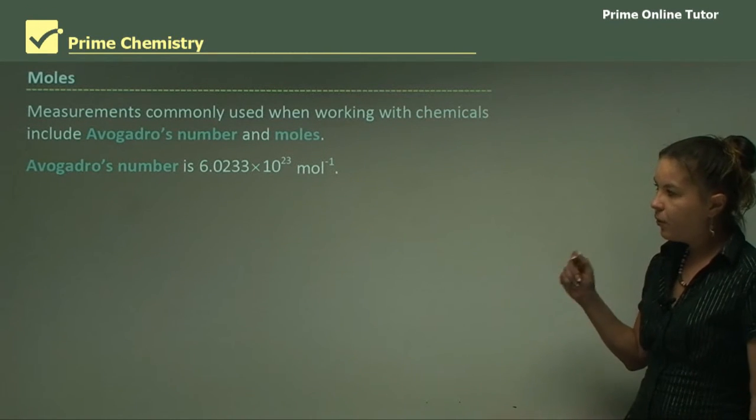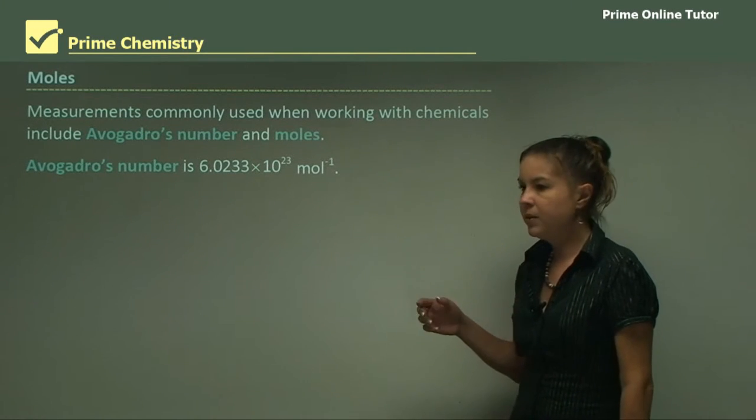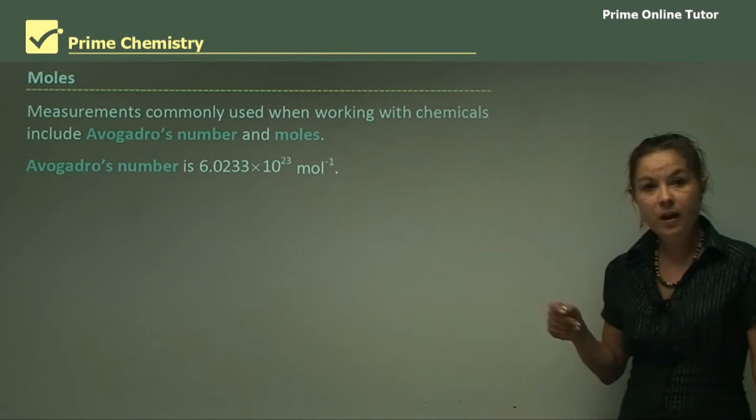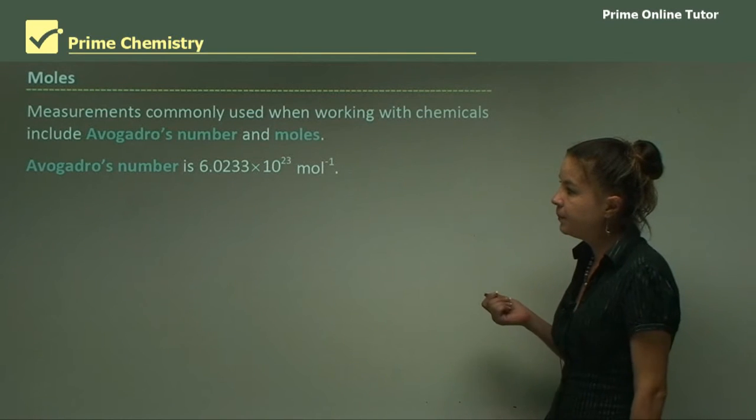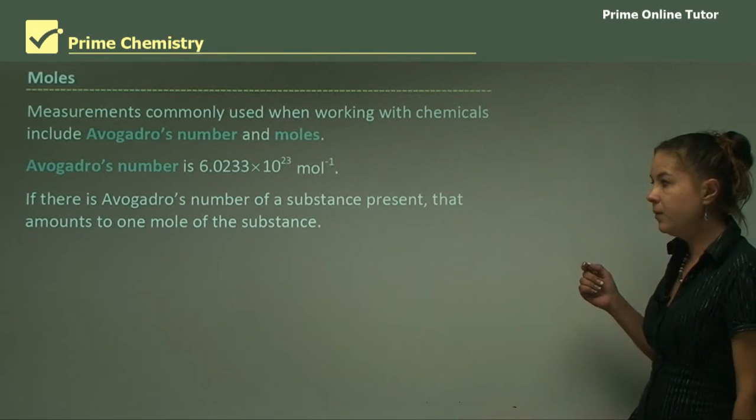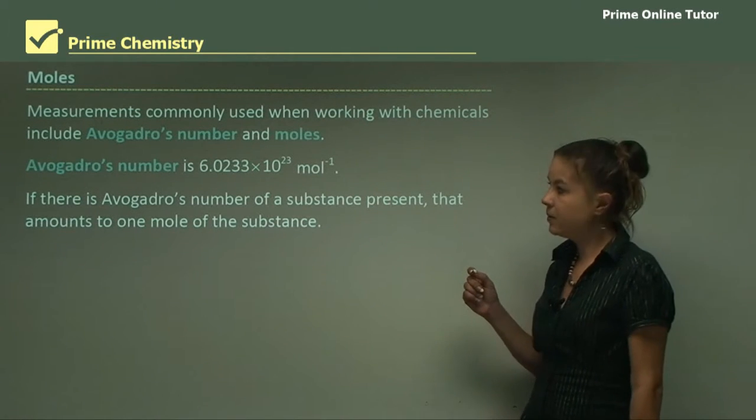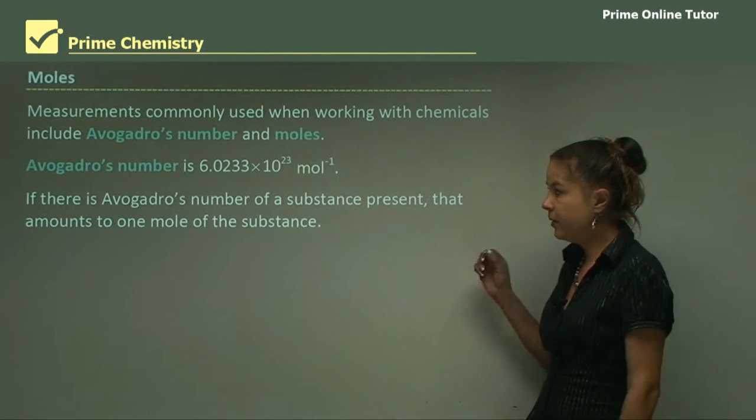So this is an incredibly large number, and we don't want to talk about molecules and elements in such large numbers because it gets very confusing. So that's why we use Avogadro's number to simplify the calculations that we have to do. So if there is Avogadro's number of a substance present, that amounts to one mole of the substance. So as you can see, moles and Avogadro's number are inherently linked.